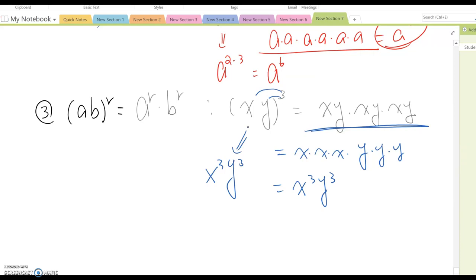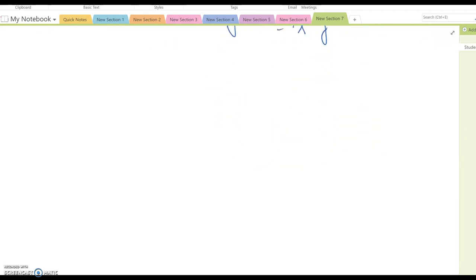Now, fourth property. A to the negative R. So, this is the very important and popular property. And you will utilize it very often while you are pursuing calculus courses. So, this will be 1 over A to the R power. In order to explain this one, I am going to make some kind of series.